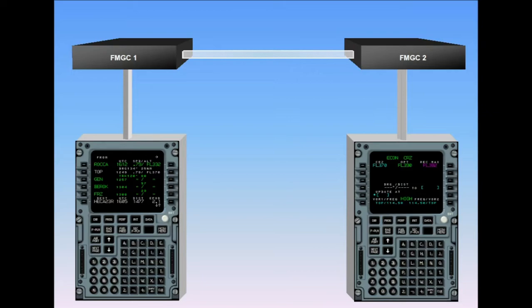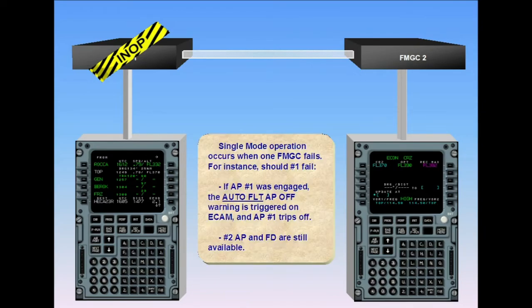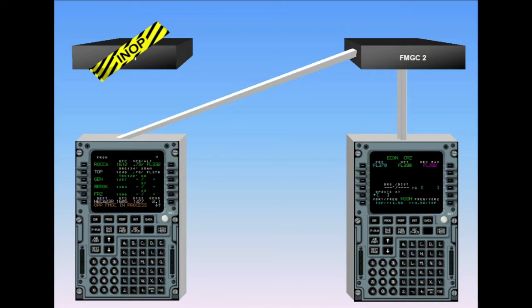Single mode operation occurs when one FMGC fails. For instance, should number 1 fail, if autopilot number 1 was engaged, the autoflight autopilot off warning is triggered on ECAM and autopilot number 1 trips off. The number 2 autopilot and flight director are still available. MCDU number 1 now becomes a repeater of number 2, and a message 'opposite FMGC in process' appears in the scratch pad.